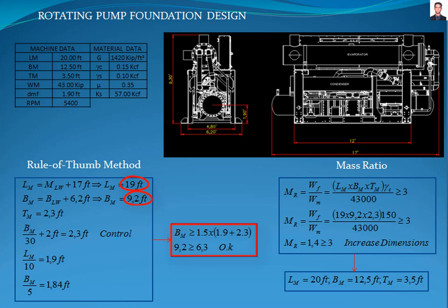Now we check the mass ratio, where Wf is the weight of the foundation and Wm is the weight of the pump. The mass ratio criteria is greater than 3 as aforementioned, which means the dimensions of the foundation shall be increased. The final dimensions of the foundation are 20 feet by 12.5 feet by 3.5 feet.